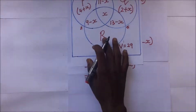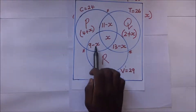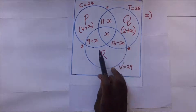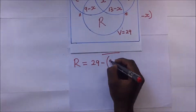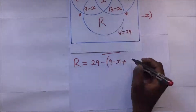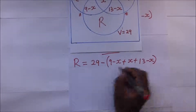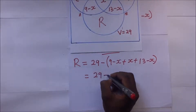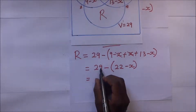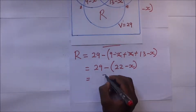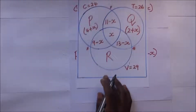To find r (volleyball only), we take the total volleyball circle of 29 and subtract the overlapping regions. So r = 29 minus (9 minus x) minus x minus (13 minus x). Simplifying: r = 29 minus 22, giving r = 7 plus x.